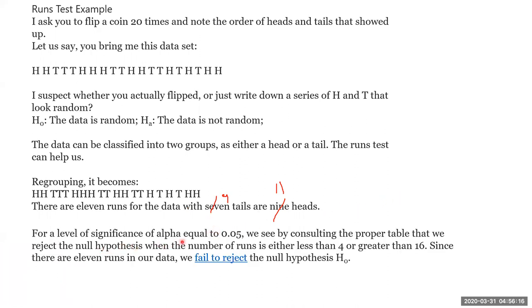Now for a 5% level of significance, I refer the table. For the 20 data points, the lower and upper limits are given by 4 and 16. So we reject the null hypothesis when the number of runs is either less than 4 or greater than 16. Between 4 and 16, we should accept the null hypothesis. We fail to reject means we accept the null hypothesis. Here we have got 11 runs, which is between 4 and 16. Therefore, we fail to reject the null hypothesis. It is random data only.